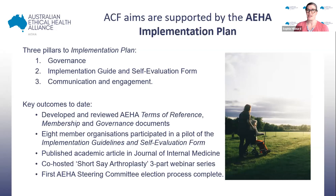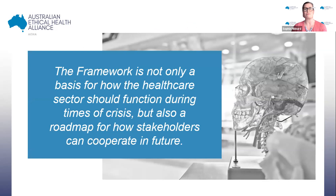Thanks Adrian. The Australian Consensus Framework aims are supported by the Australian Ethical Health Alliance's implementation plan. The three key pillars to our implementation plan are our governance strategy, our implementation guide and self-evaluation form, and communication and engagement. Our key outcomes to date include having developed terms of reference, membership and governance documents. Eight member organisations have participated in the implementation and self-evaluation form pilot. We have published an academic journal article in the Journal of Internal Medicine, co-hosted the Short Stay Arthroplasty three-part webinar series, and had our first AEHA steering committee election. This framework is not only the basis for how our healthcare sector should function during times of crisis, but also a roadmap for how we can cooperate in the future.